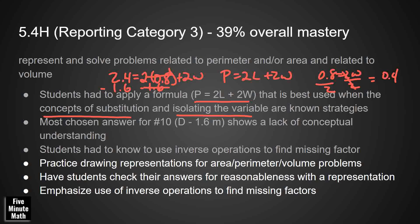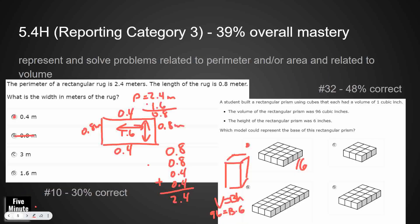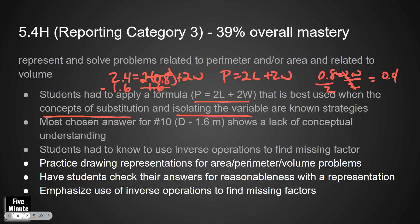But those aren't concepts that are known in fifth grade. So we have to do a little bit more work with visuals and fact families. So that made that difficult. And then the most chosen answer was D on number 10. So they might have done all of this work right here and realized it was 0.8 and not split that in half. Maybe they doubled it. Maybe they just subtracted 2.4 minus 0.8 is 1.6. So there was a lack of conceptual understanding there making me think, even though there was a visual there, students didn't really know how to find the perimeter when there's a missing side length.